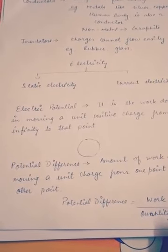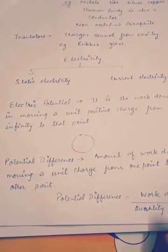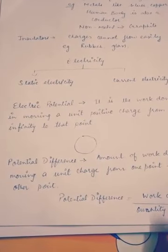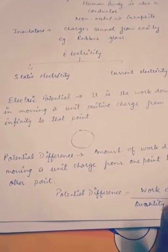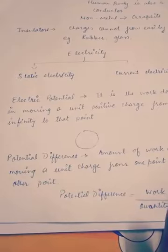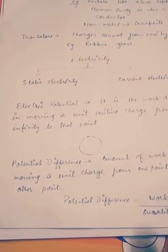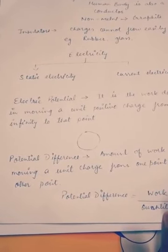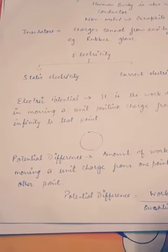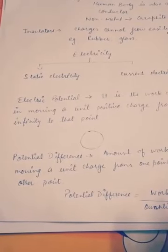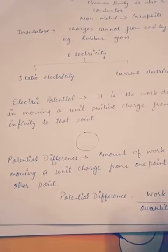Now coming to electricity. Electricity can be divided into two forms: static electricity and current electricity. Static means when the body is at rest, so when electricity is at rest, the charges are not moving — they are at rest. We call it static electricity. For example, if you take a plastic ruler and rub it through dry hair and bring it next to pieces of paper, the plastic ruler will attract the pieces of paper. This is known as static electricity.